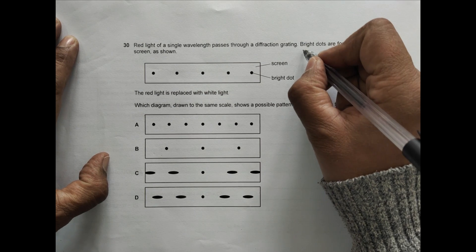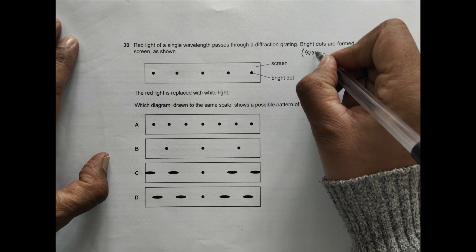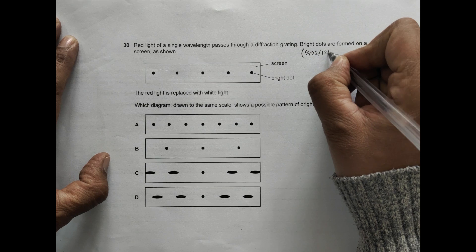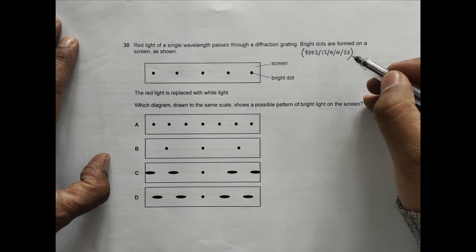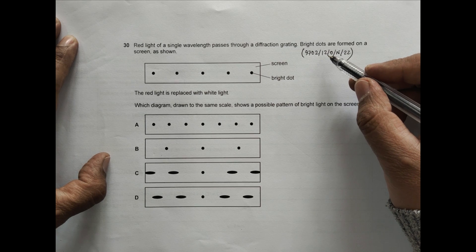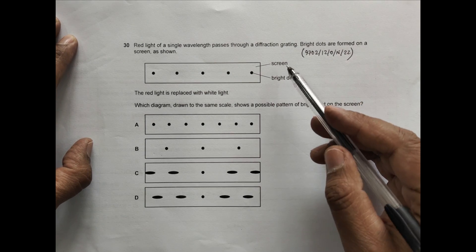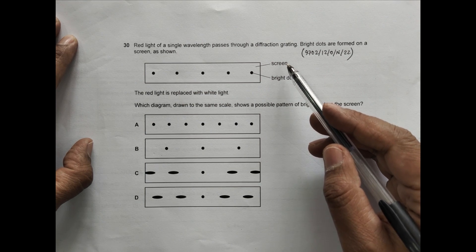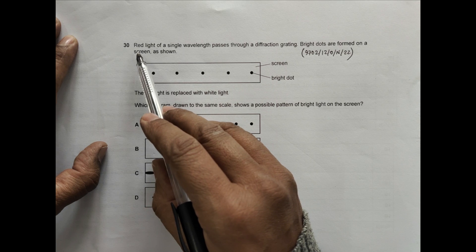Hello folks, this is 9702, 1/2/0, year 2022, October/November paper 12, question number 30. This question is concerned with the chapter superposition of waves and it's about pattern for the diffraction grating. A red light of a single wavelength passes through a diffraction grating.